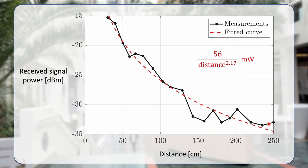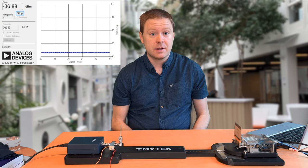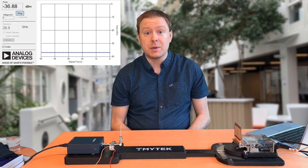The general conclusion is that in both the short and longer measurements, the received signal power decays roughly as 1 over distance to the power of 2, but there will be fluctuations around that model in practice. We will now determine how much different objects block signals in the millimeter wave bands, particularly at 26.5 GHz.